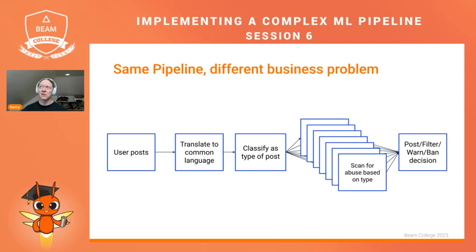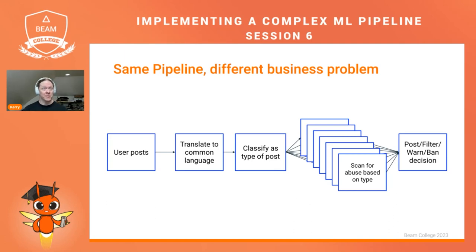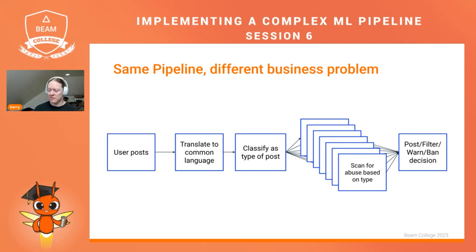You can classify posts because they look very different, and there are different standards for different kinds of posts or communities. You can probably use rougher language in a community of music fans than in a community of university professors. You want to be able to moderate appropriately, so you classify the type of post and then send it to a model that can scan for abuse based on the class of post.